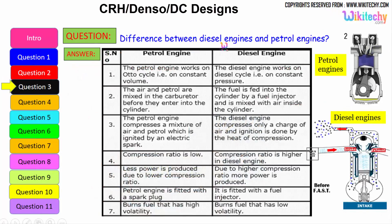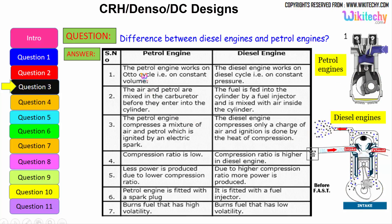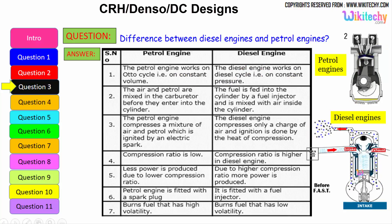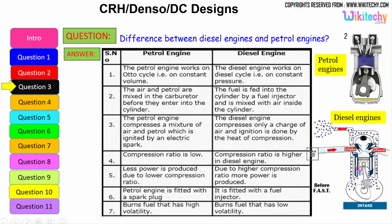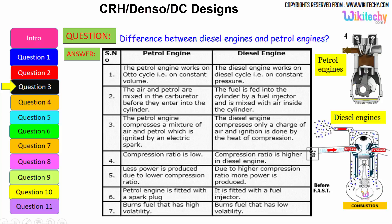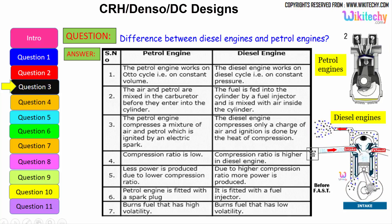The difference between diesel engine and petrol engine: the petrol engine works on the Otto cycle, therefore on constant volume, whereas the diesel engine works on the diesel cycle, on constant pressure. In a petrol engine, air and petrol are mixed in the carburetor before entering the cylinder, whereas in a diesel engine, fuel is fed into the cylinder by a fuel injector and mixed with air inside the cylinder.